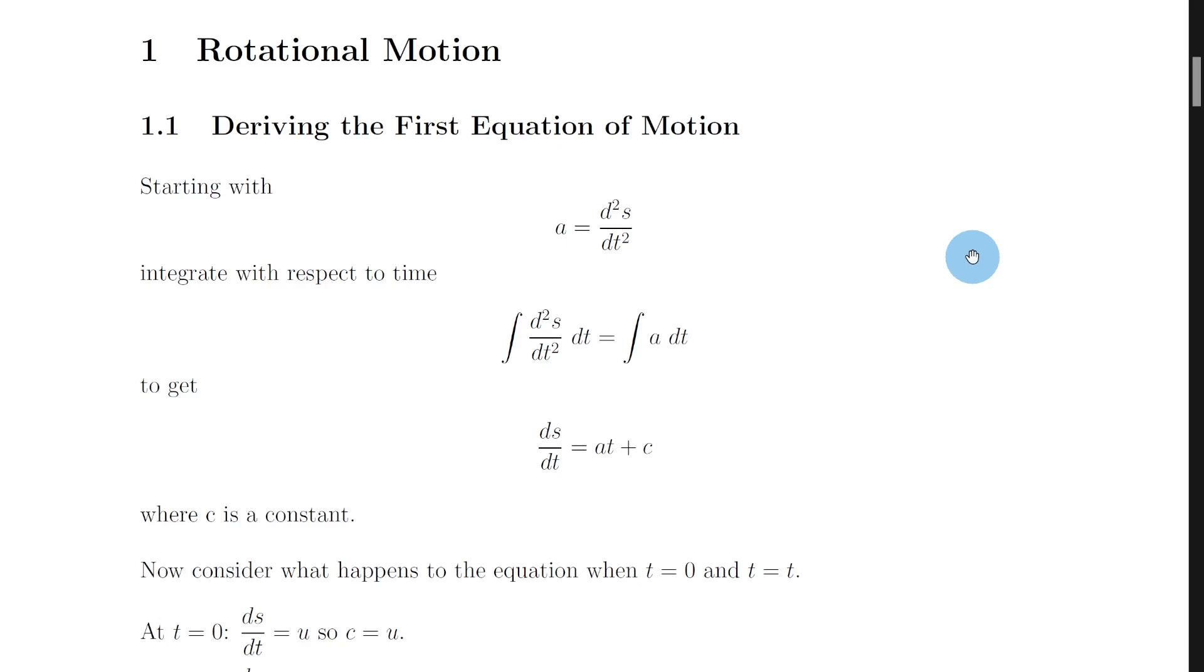Now the first equation of motion was first seen at higher level and then seen again in advanced higher level, and it's expected that you can derive the equation v equals u plus at. And how do you do it? Well you want to start with this equation here, a equals d squared s by dt squared, which says that acceleration is equal to the second differential of displacement s with respect to time t. And what you then want to do is integrate both sides with respect to time. So we have the integral of d squared s by dt squared dt is equal to the integral of a dt.